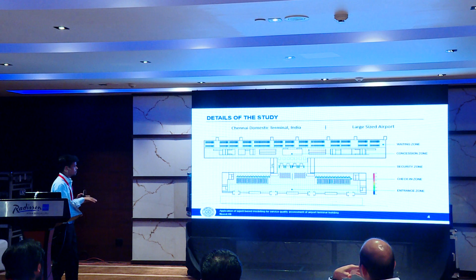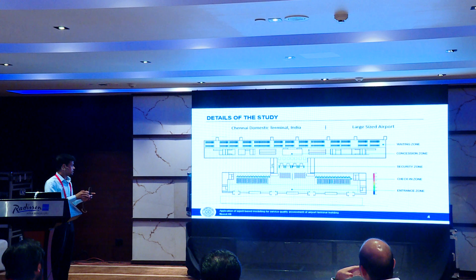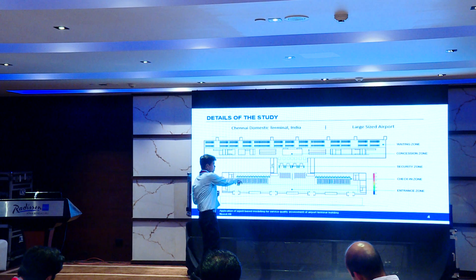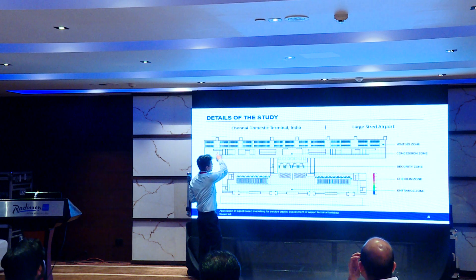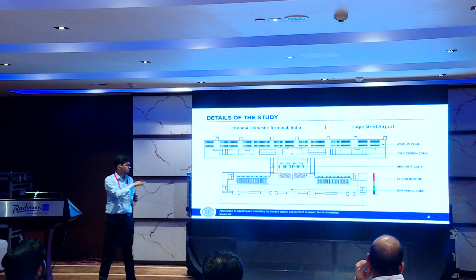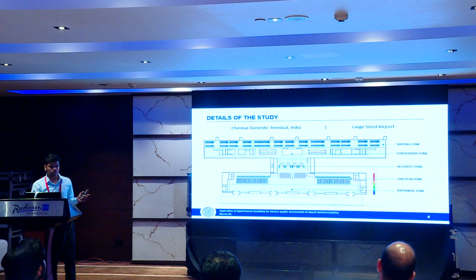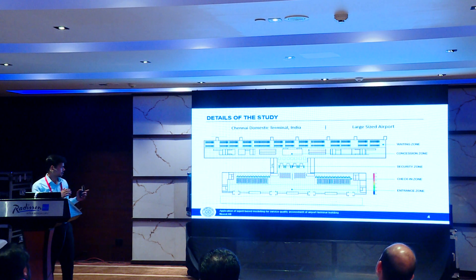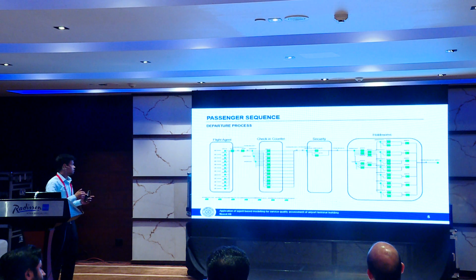The spatial modeling is done in AnyLogic for each activity — this is the check-in zone, this is the security zone, and this is the waiting lounge for departing passengers. This spatial modeling in AnyLogic depicts the real condition of different activities like check-in, security, and others.